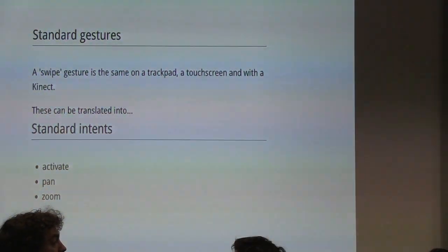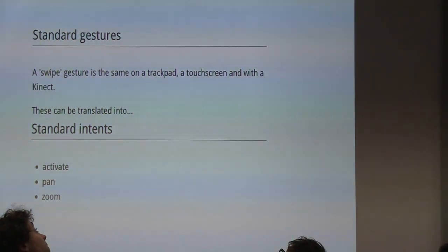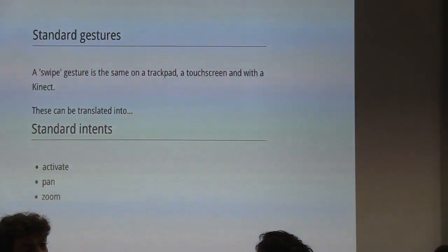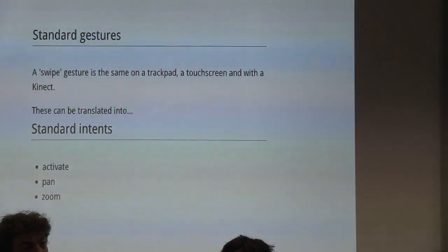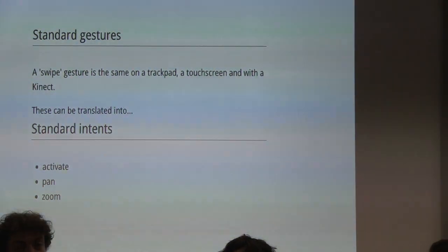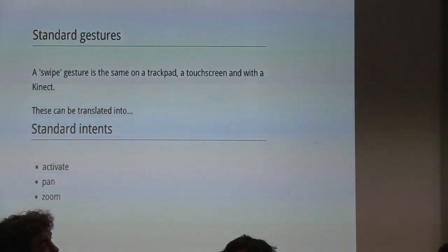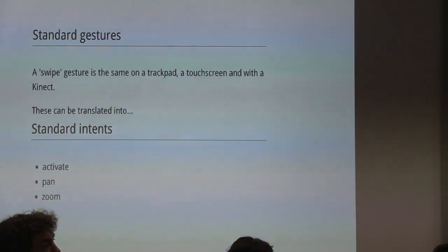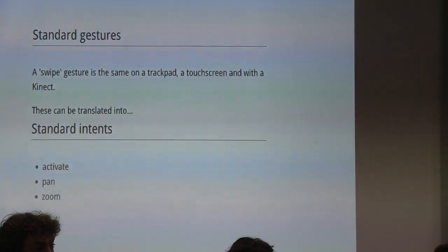Taking a swipe gesture on a trackpad, the UI event spec gives us a way to turn this into a pan event. So it doesn't matter whether the user provided input using the speech API as a 'go-left' command, by swiping their hand on a touch screen, or by moving their hand in the air to mimic a swipe action. The spec gives us a way to translate this into a pan event, which we can use to move a page around.